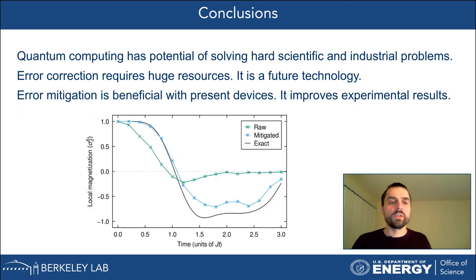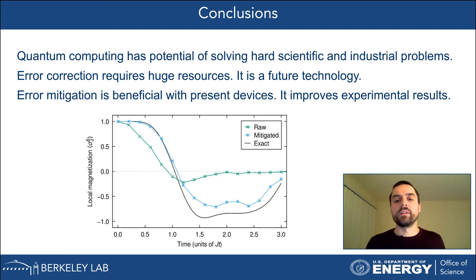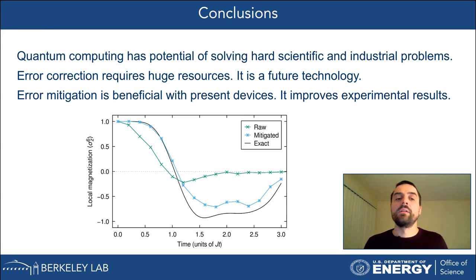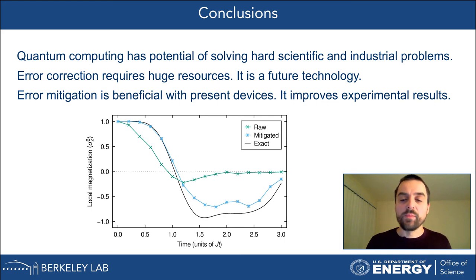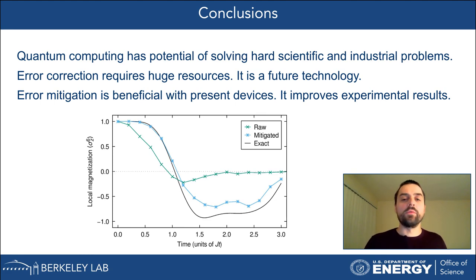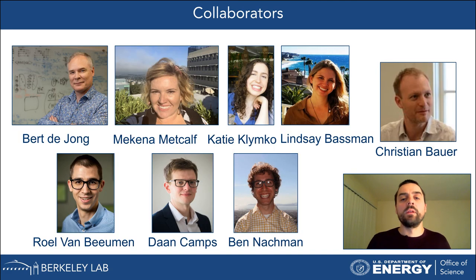In conclusion, quantum computing has the potential to solve hard scientific and industrial problems. Error correction requires huge resources, but error mitigation is useful already today and can improve experiments on existing quantum computers. Thank you very much for your attention.